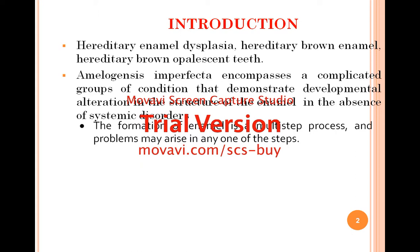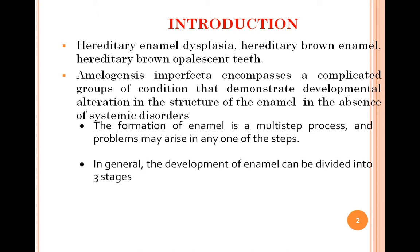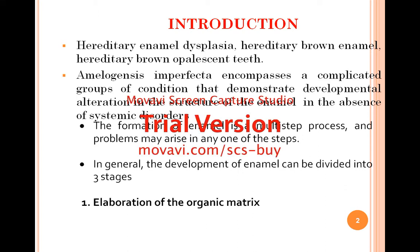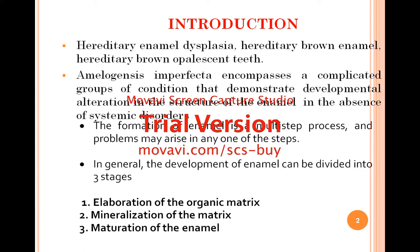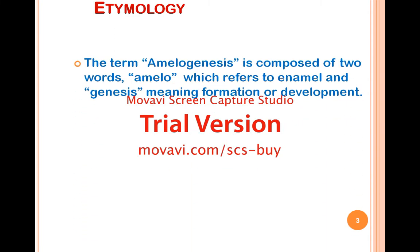Formation of enamel is a multiple-step process and problems may arise at any one of the steps. In general, the development of enamel can be divided into three stages: first, elaboration of the organic matrix and mineralization of the matrix, and finally, maturation of the enamel.